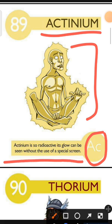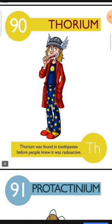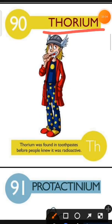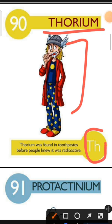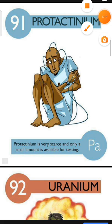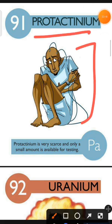Element number 90 is Thorium. The characteristic of Thorium is: Thorium was found in toothpaste before people knew it was radioactive. Element number 91 is Protactinium. The characteristic of Protactinium is: Protactinium is very scarce and only a small amount is available for testing.